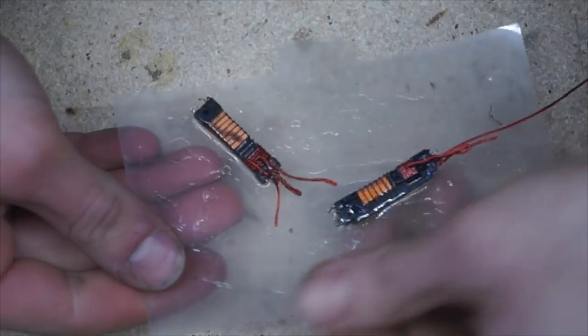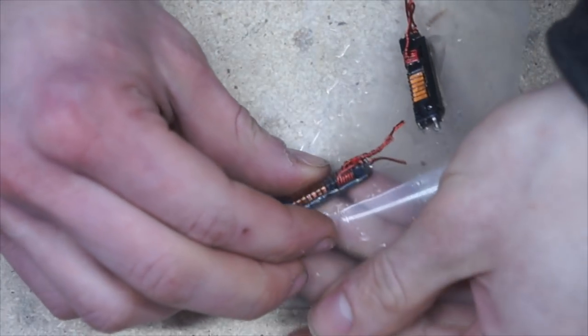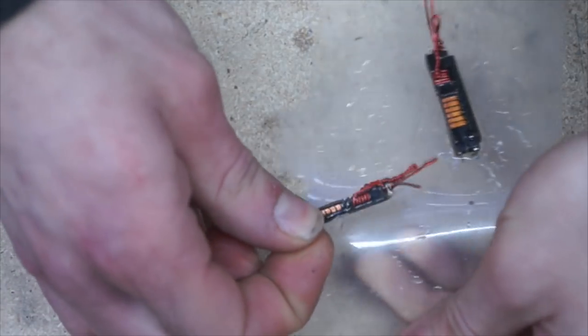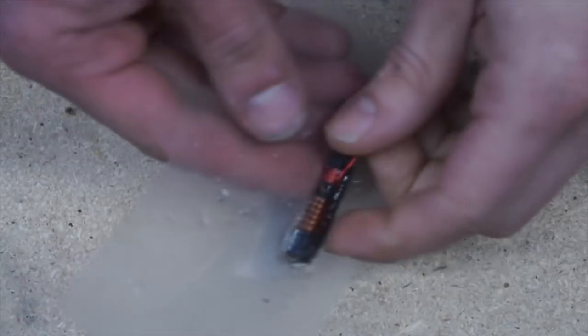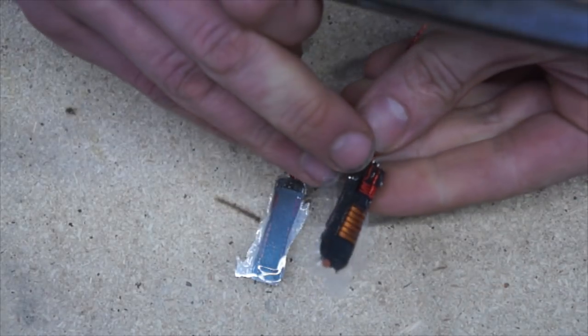Once the epoxy is fully cured, it should be pretty easy to remove the transformers. Even if they're stuck, that's okay, you can always just cut them out with the scissors and remove the rest of the material. Okay, that looks really good.